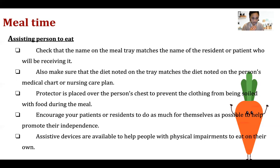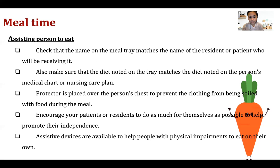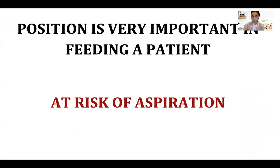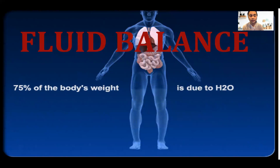Place a protector on the chest to prevent soiling of the gown. Encourage patients and residents to do as much for themselves as possible — don't let the patient become dependent on you. Let them have their independence so that when discharged, they can handle and manage themselves. Assist devices are available to help people with physical impairments eat on their own.